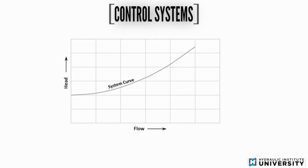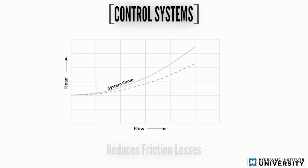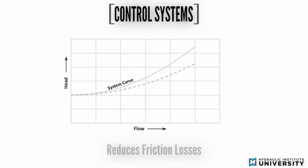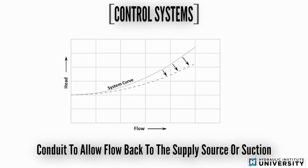Additionally, the system curve can also be adjusted by using a bypass, which is a conduit that reduces friction losses or pressure drop by permitting flow to pass around a portion of the system back to the supply source or another application.